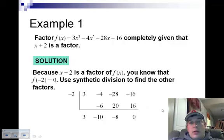Here's my 3. I go ahead and I bring it down. Negative 2 times 3 is negative 6. Negative 4 plus negative 6 is negative 10. Negative 10 times negative 2 is 20. Negative 28 plus 20 is negative 8. And then negative 2 times negative 8 is 16. Negative 16 plus 16 is 0. This is good. Getting a remainder of 0 means that it is a factor.